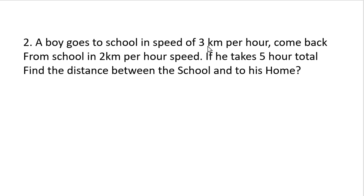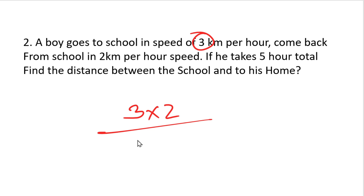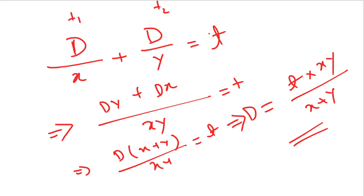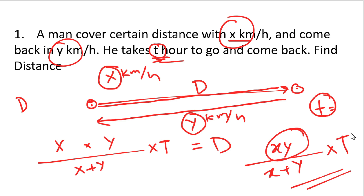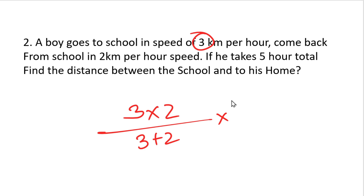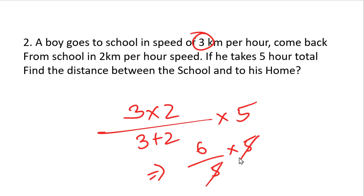A boy goes to school at a speed of 3 km per hour and comes back from school at 2 km per hour. The total time is 5 hours. Using the formula, the distance to school is T into xy divided by x plus y, which gives 5 into 3 times 2 divided by 3 plus 2, equal to 5 into 6 divided by 5, which equals 6 km. The distance to school is 6 km.